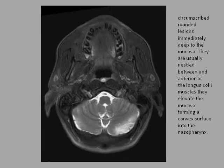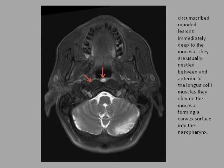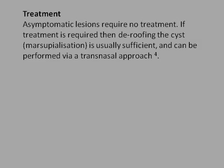That is a Thornwald's cyst: a circumscribed rounded lesion immediately deep to the mucosa, nestled between and anterior to the longus colli muscles, elevating the mucosa to form a convex surface into the nasopharynx. Thornwald's cysts that are asymptomatic require no treatment. If treatment is required, de-roofing the cyst — called marsupialization — is usually sufficient and can be performed via a transnasal approach.